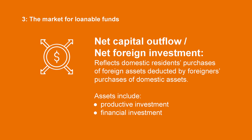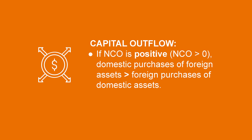Now let's turn to the market for loanable funds. An open economy also involves the flow of capital between countries. This is illustrated in the net capital outflow indicator, which is also referred to as net foreign investment. The net capital outflow reflects domestic residents' purchases of foreign assets deducted by foreigners' purchases of domestic assets. These assets include productive investment — for example, when a local firm invests overseas — and financial investment — for example, when residents purchase foreign stocks or bonds. This account can also be positive or negative. If the NCO is positive, it means that domestic purchases of foreign assets are greater than the foreign purchases of domestic assets. This is called capital outflow, meaning a country is investing more overseas than what it's receiving from abroad.